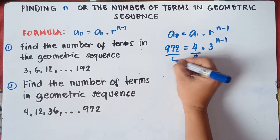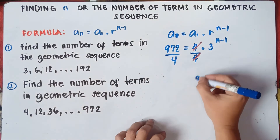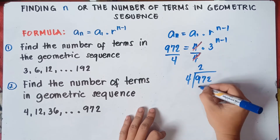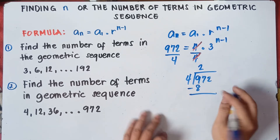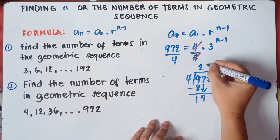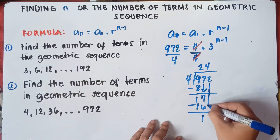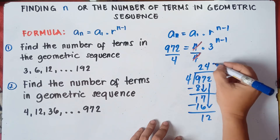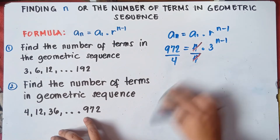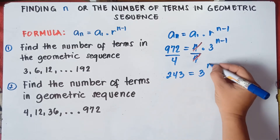Next step: divide both sides by 4 so the remaining equation will be 3 raised to the power of n minus 1. Cancel out the 4. 972 divided by 4 is 243. So we have 243 equals 3 raised to the power of n minus 1.